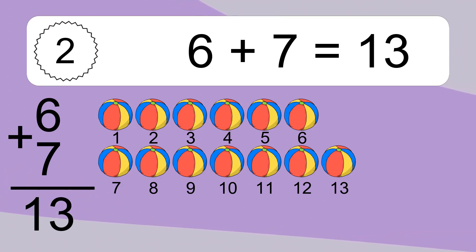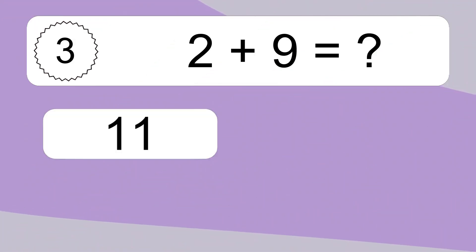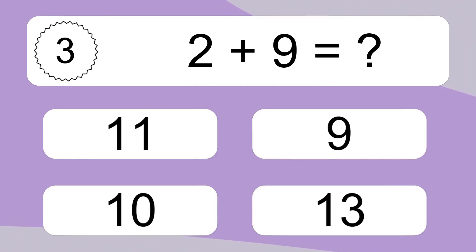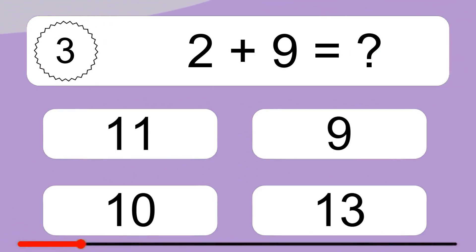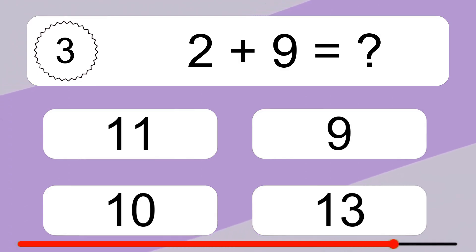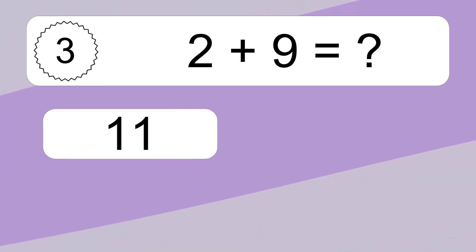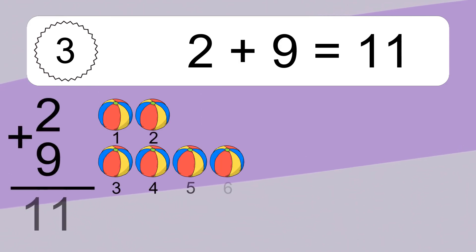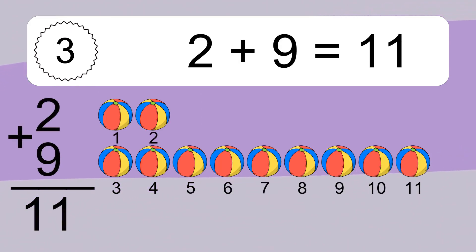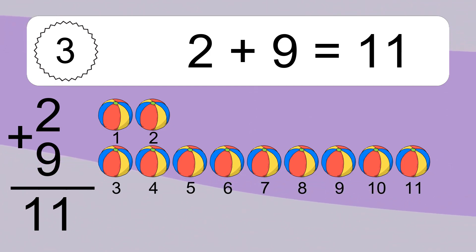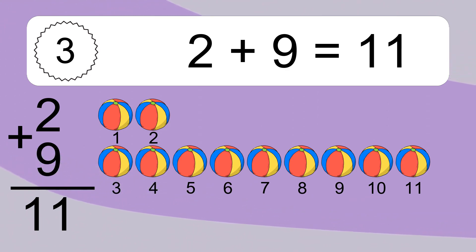Two plus nine equals what? Two plus nine equals eleven. Let's count it: one, two, three, four, five, six, seven, eight, nine, ten, eleven.